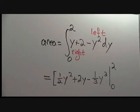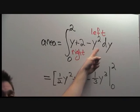The integral now reads: the area is equal to the integral from 0 to 2 of y plus 2 minus y squared. This was the right function. This was the left function.